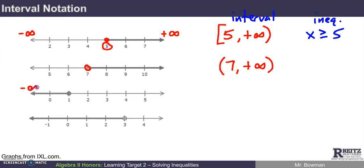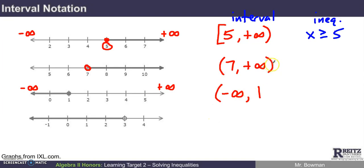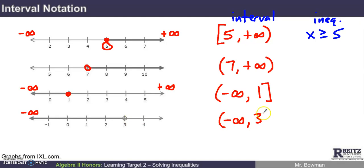For x ≤ 1, the inequality comes from huge negative numbers — negative infinity — up to and including 1. Negative infinity gets the rounded bracket just like positive infinity does. Since we're including 1, we use a square bracket, giving us (-∞, 1]. For x < 3, we need from negative infinity up to but not including 3, so both sides get rounded brackets: (-∞, 3).